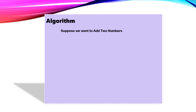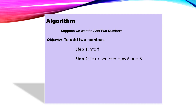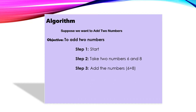Suppose humein do number ko add karna hai, is ke liye program likhna chahte hain. Hum chahte hain ke do number add ho jayen computer ke zariye se. Toh us program se pehle hum ne ek flow chart banana hai aur flow chart se pehle algorithm likhna hoga. Toh yeh do number ko add karne ke liye jo hum algorithm likhein ge, us mein kya karein ge: pehla step hai START karna. START karne ke baad hamare paas do number hone chahiye — suppose hum 6 aur 4 lete hain. Is ke baad hum chahte hain ke un ka add ho jaye, yaani 6 ko plus ho jaye 4 ke saath — yeh teesra step hoga. Is ke baad jo is ka result hoga processor se, woh hum display karna chahein ge.